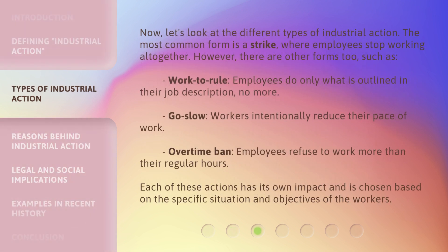Now let's look at the different types of industrial action. The most common form is a strike, where employees stop working altogether. However, there are other forms too, such as work to rule — where employees do only what is outlined in their job description, no more. Go slow — where workers intentionally reduce their pace of work. And an overtime ban — where employees refuse to work more than their regular hours. Each of these actions has its own impact and is chosen based on the specific situation and objectives of the workers.